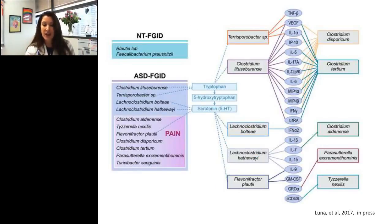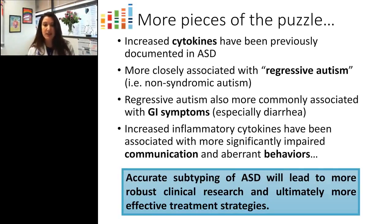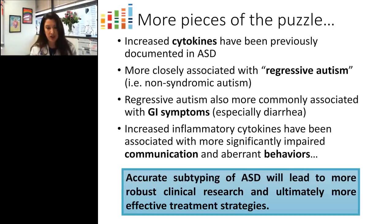Specific organisms are linked to ASD, with two organisms found in increased abundance in the neurotypical-with-functional-GI-disorder group. Potential connections to the serotonin pathway were observed, along with correlations with multiple inflammatory cytokines among these key Clostridiales. The correlation of multiple microbes with inflammatory cytokines is compelling, as increased cytokines have been previously reported in non-syndromic and/or regressive autism. Increased inflammatory cytokines have also been associated with the more severe end of the spectrum, including those with significant communication difficulties and aberrant behaviors — reinforcing that accurate subtyping of ASD will lead to more robust clinical research and ultimately more effective treatment strategies.